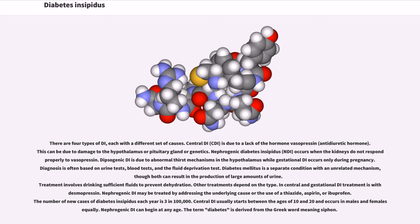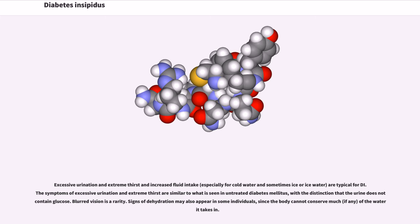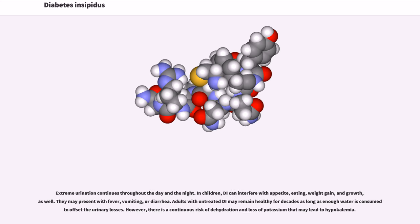Nephrogenic DI can begin at any age. The term diabetes is derived from the Greek word meaning siphon. Excessive urination and extreme thirst and increased fluid intake are typical for DI. The symptoms of excessive urination and extreme thirst are similar to what is seen in untreated diabetes mellitus, with the distinction that the urine does not contain glucose. Blurred vision is a rarity. Signs of dehydration may also appear in some individuals, since the body cannot conserve much of the water it takes in. Extreme urination continues throughout the day and the night.